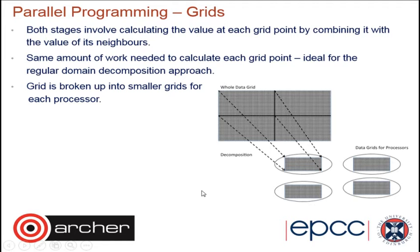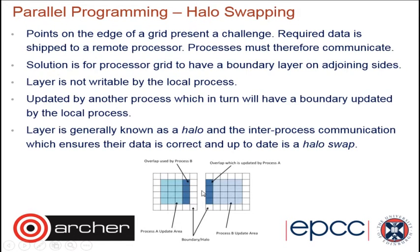Both stages — computing the stream function and computing the velocity field — involve calculating the value of each grid point by combining it with neighboring values. That means for each grid point you're doing the same amount of work, which makes this ideal for a regular domain decomposition approach where you split things up into equal chunks. The parallel version of the code breaks up the grid into however many subgrids you specify by choosing how many processes to run.